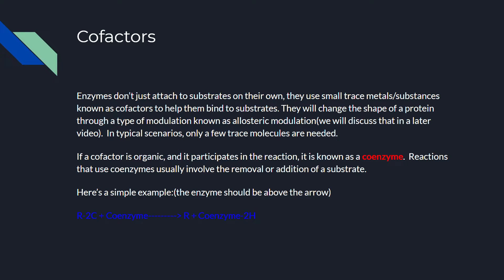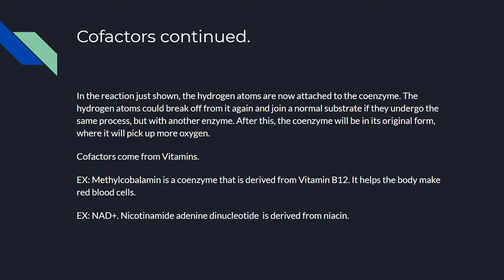There's a special type of cofactor called a coenzyme. A coenzyme is a cofactor which is organic and actually directly participates in the reaction. Reactions that use coenzymes usually involve the removal or addition of atoms from the substrate. For example: R (the remainder of the molecule) binds to 2H plus the coenzyme, and with the enzyme, the remaining molecule plus the coenzyme binds to the hydrogen. The hydrogen atoms become attached to the coenzyme, and in a second reaction, the hydrogen molecules return to being a substrate while the coenzyme goes back to cofactor form to pick up more hydrogen.